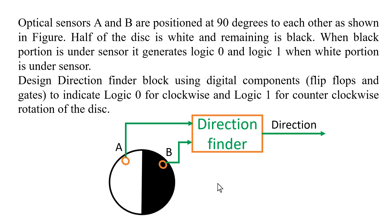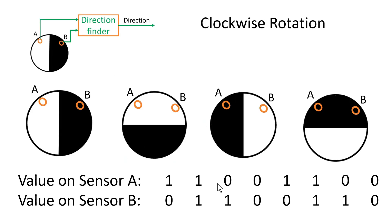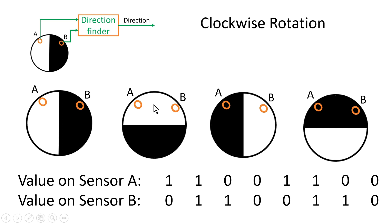Now let me explain the answer. Let us see the output of both sensors A and B when the disk is rotating in a clockwise direction. In the first position, the output of sensor A will be high and the output of sensor B will be 0. As the disk rotates clockwise, both sensors A and B come in touch with the white portion, so both give output high. In the third position, A gives logic 0 and B gives logic high.